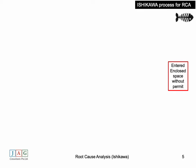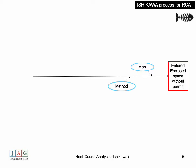For the Ishikawa diagram, we place the problem on the extreme right — the problem being 'entered enclosed space without permit to work.' We then draw an arrow towards the problem and identify the area heads where the root cause may lie, such as man, method, and machinery. The categories used depend on the nature of the incident — it is not necessary to always use man, machinery, and method.